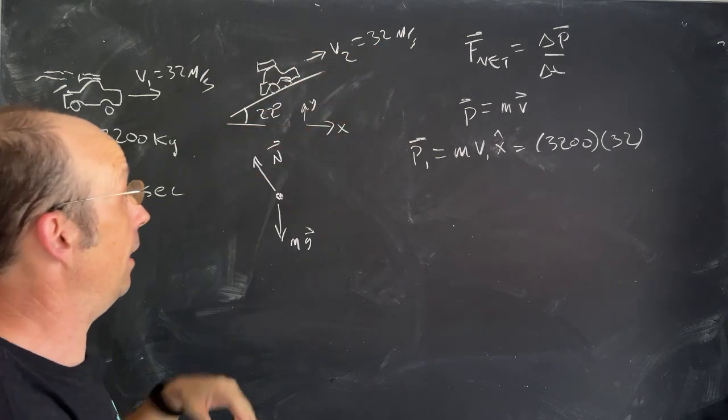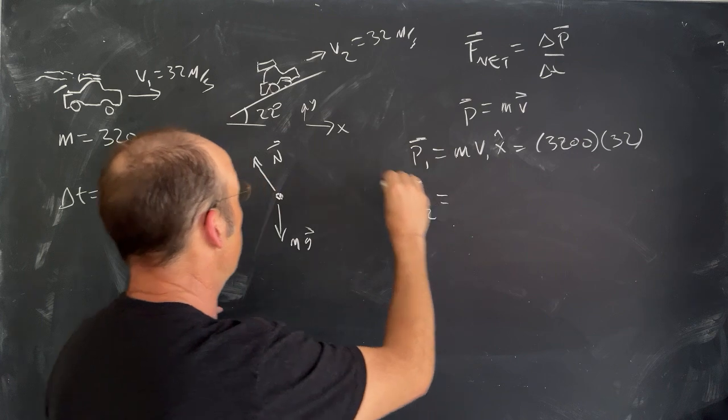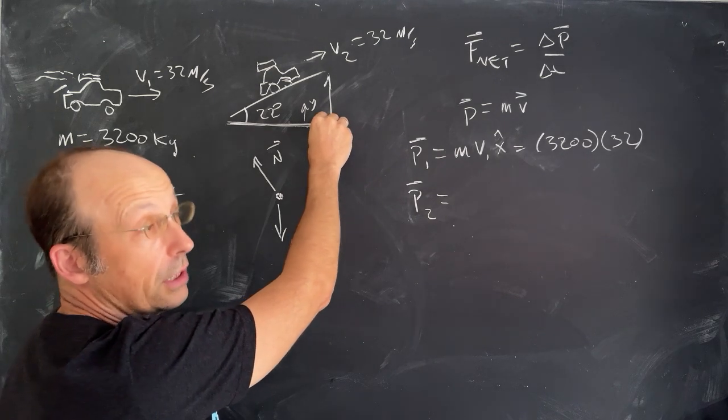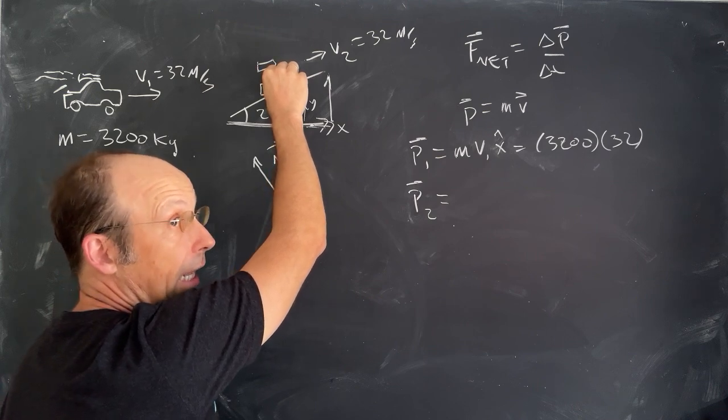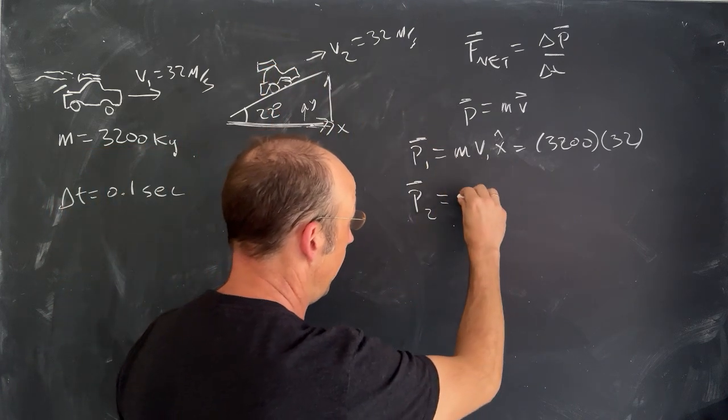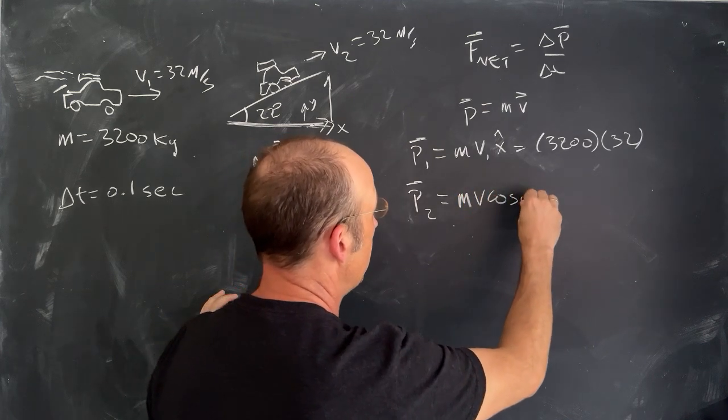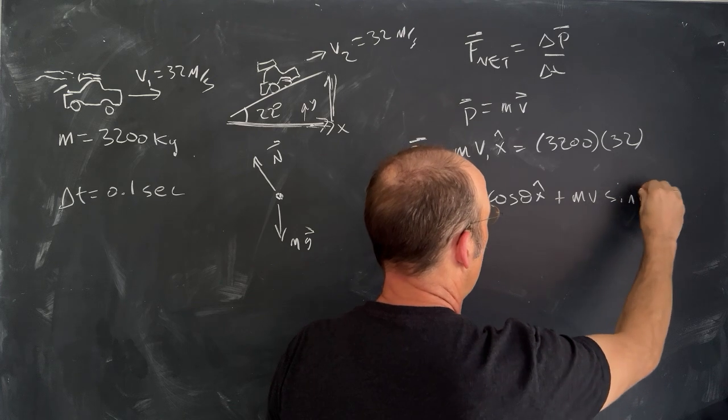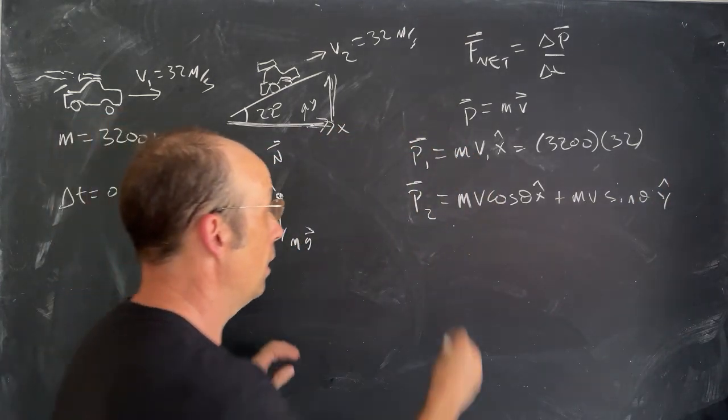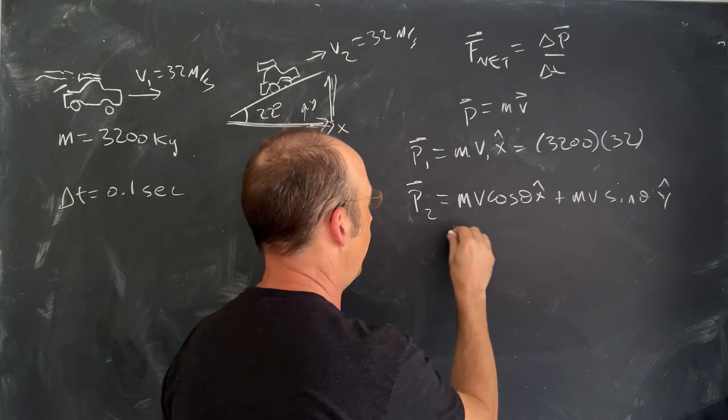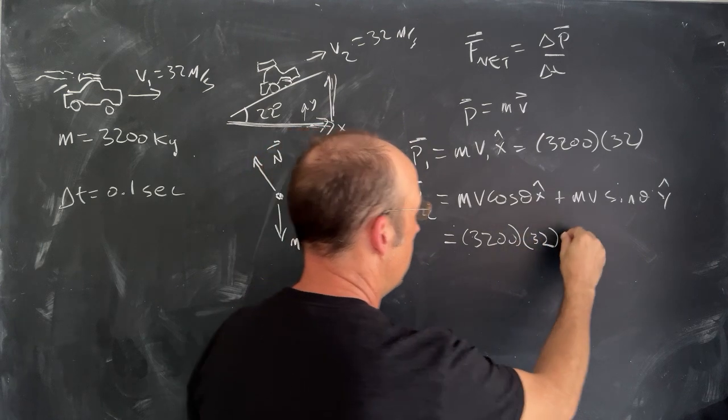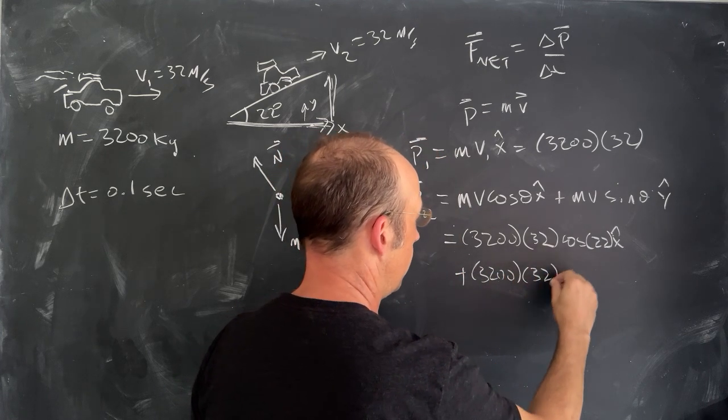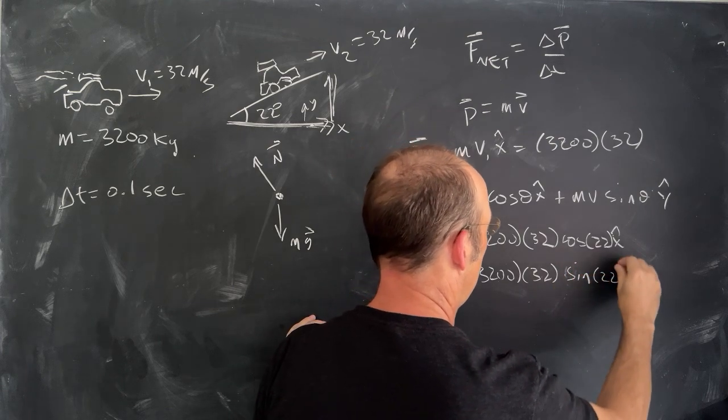Now, what about P2? P2 is also 32 meters per second, but it's at an angle. So, I can write P2 as the following vector. Its x component is right here, y component is right there. So, this is the adjacent side of that right triangle. So, cosine of 22 is going to give me this side, multiplied by the magnitude, the hypotenuse, and I can get the x velocity. So, the x velocity is going to be equal to M V cosine theta x-hat. And then the y direction right here is the opposite side. So, we're going to use sine plus M V sine theta y-hat. So, now I have a vector there.